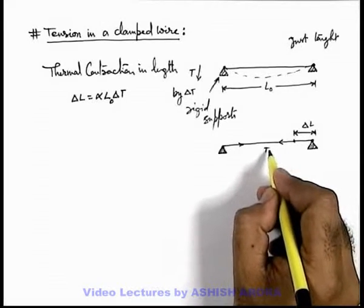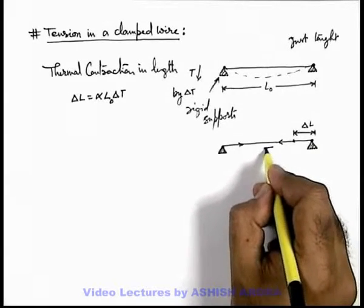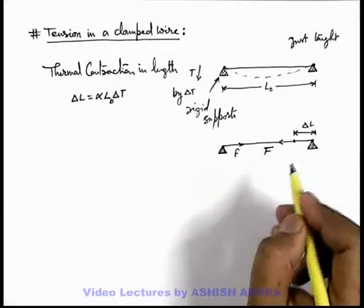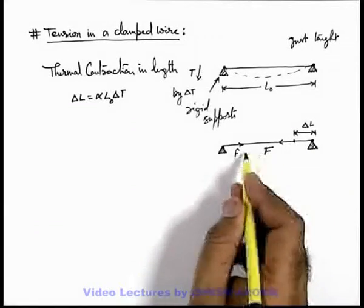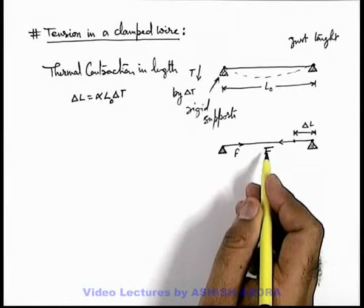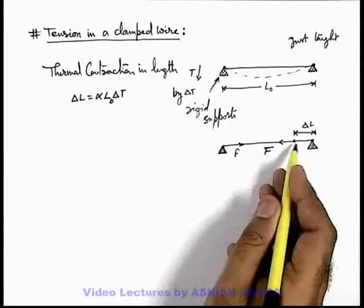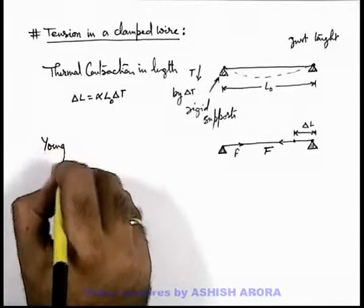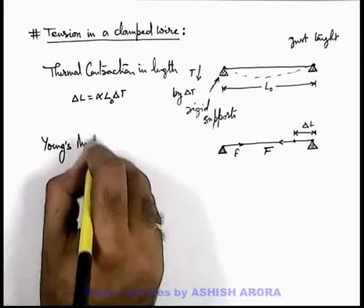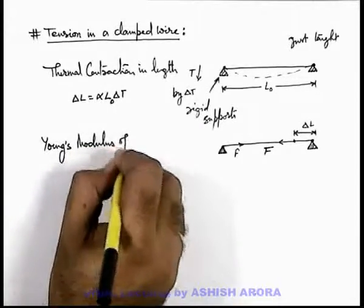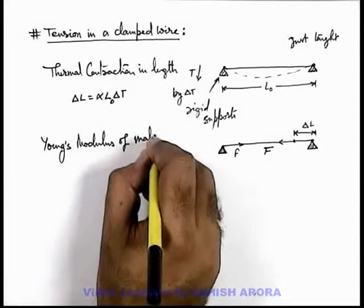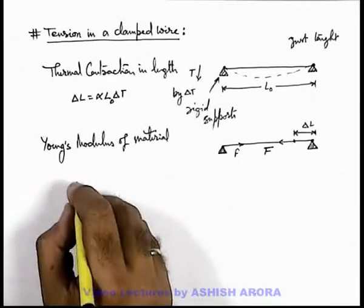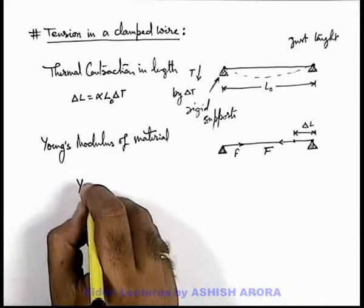So in this situation, this tension we can call it F, which is developed within the length of this wire. So we can find out very easily the tension developed in the wire by using the Young's modulus of this metal wire. As we know, Young's modulus of material can very easily be related by strain and stress developed in the material.